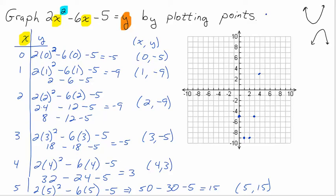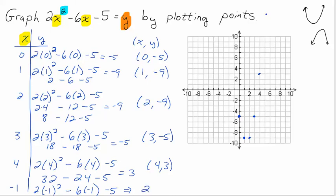Let's go ahead and put negative one in. I'll erase this five and put negative one in. Negative one squared is positive one — negative one times negative one is positive one — times two gives me positive two. Then I have negative six times negative one, that's positive six. Take away five — you've got to be careful with your negatives. So I have eight minus five is three. That gives me the point negative one, positive three. You see what's happening? We're getting two points at the same y value, which is a characteristic of a parabola.